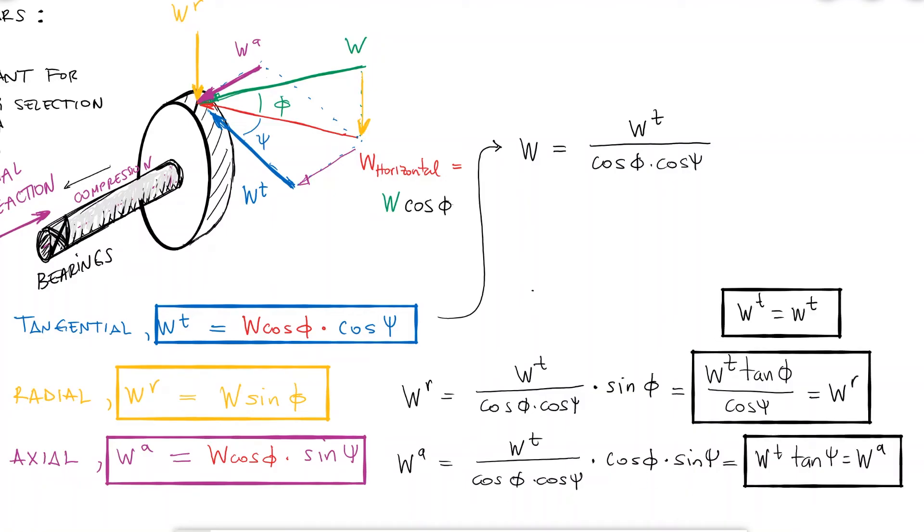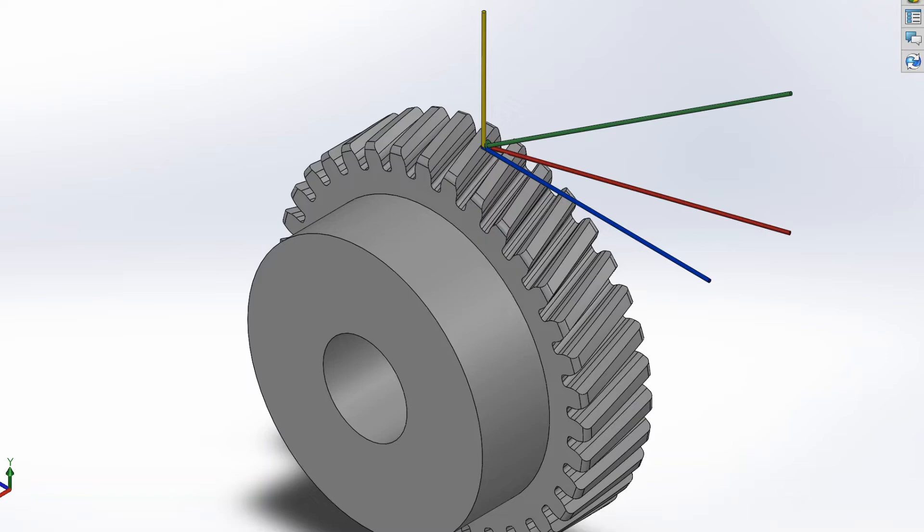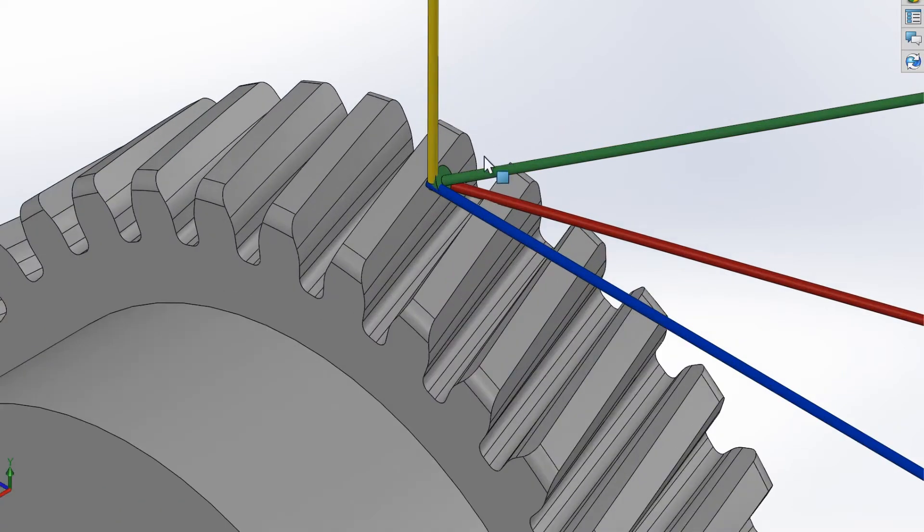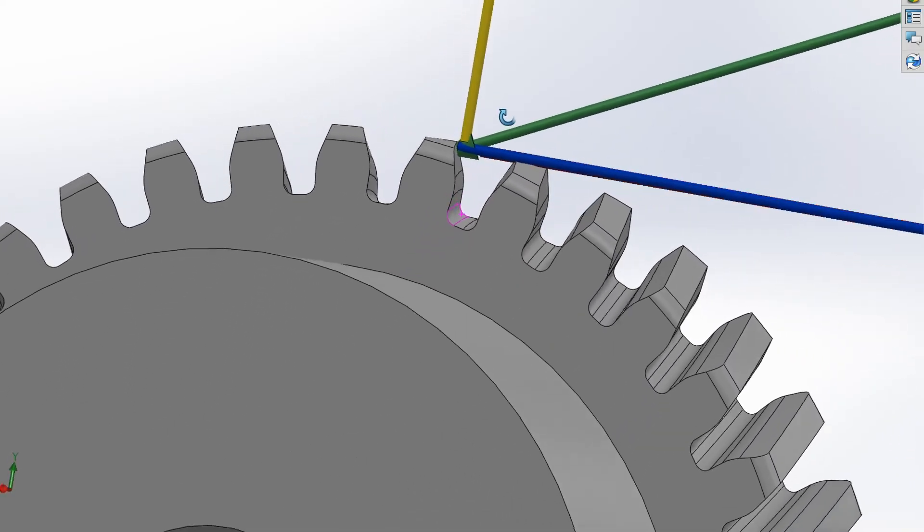Let's take a look at a 3D render of a helical gear with some of the forces and the force components. The green vector represents the full force W, and we see that it's normal to the surface it affects.